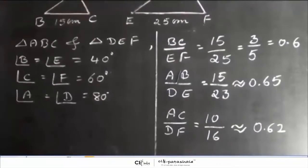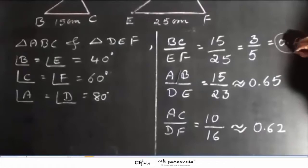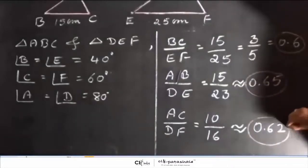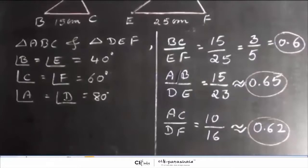You can observe here children that BC by EF is equal to AB by DE which is equal to AC by DF which is approximately 0.6.